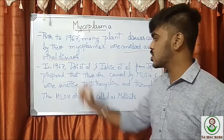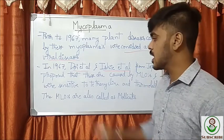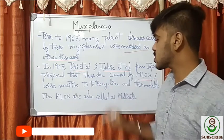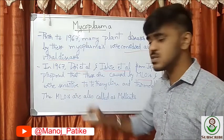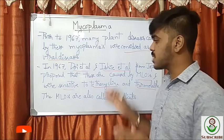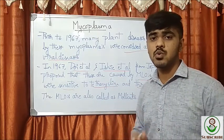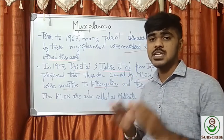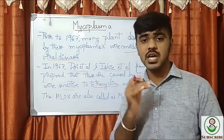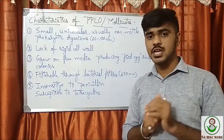Later in 1967, Doi et al. and Ishi et al. from Japan proposed that these diseases are caused by MLOs, and these organisms are sensitive to tetracycline and thermolabile. Later they came to know these are not caused by viral organisms — there is something more. These are special organisms, more than the virus and less than the bacteria — these are mycoplasmas.